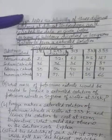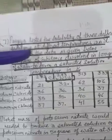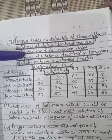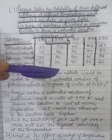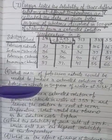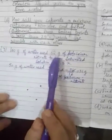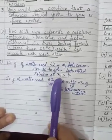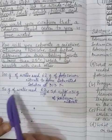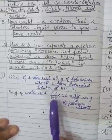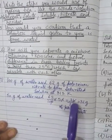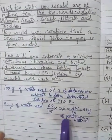Pragya tested the solubility of three different substances at different temperatures and collected data. According to the table, grams of substance dissolves in 100 grams of water to form a saturated solution. What mass of potassium nitrate would be needed to produce a saturated solution of potassium nitrate in 50 grams of water at 313 Kelvin? 100 grams of water need 62 grams of potassium nitrate to form a saturated solution at 313 Kelvin. So 50 grams of water need 62 divided by 100 multiplied by 50, which equals 31 grams of potassium nitrate.